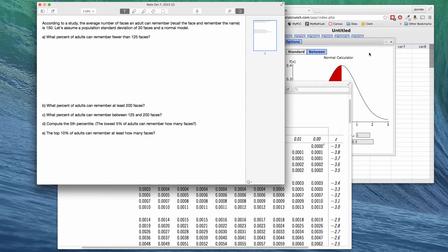In this video, we're going to compute some normal probabilities using the normal distribution. So here's an example. According to a study, the average number of faces an adult can remember, in other words recall the face and remember the name, is 150. Let's assume a standard deviation of 30 and also a normal model. So this normal model is pretty important because if we don't know the shape of the data, we don't know where to go to calculate our probabilities or percentages.